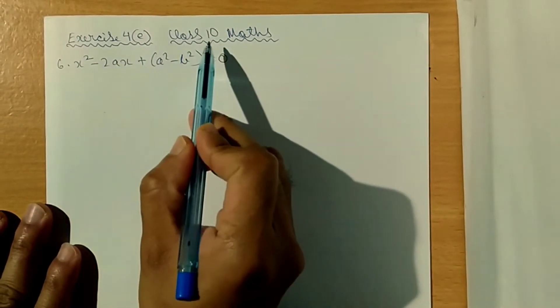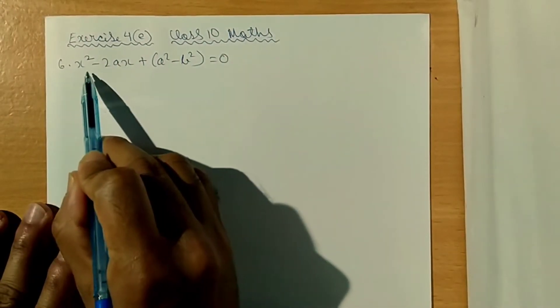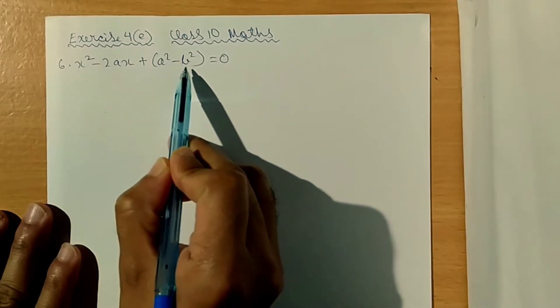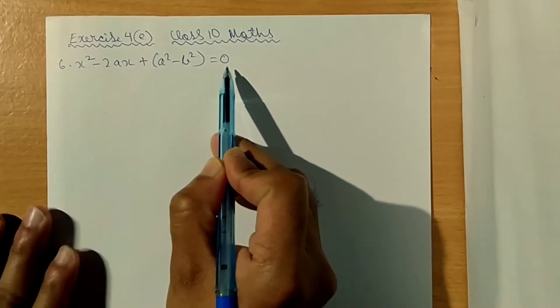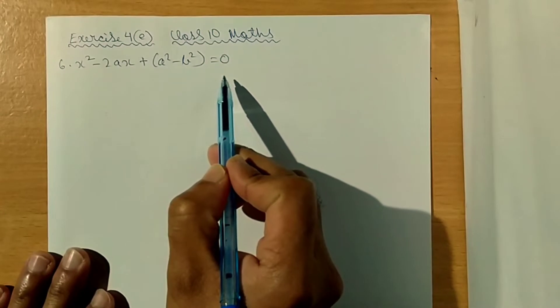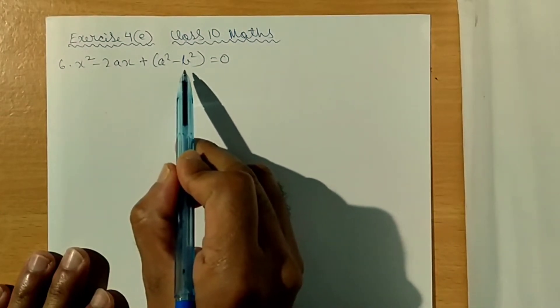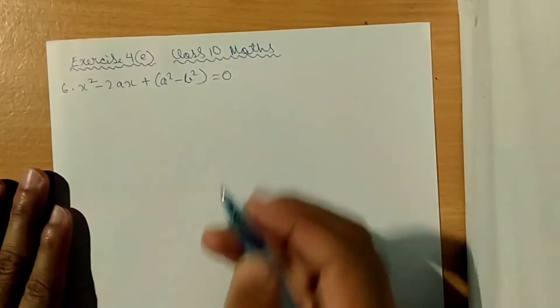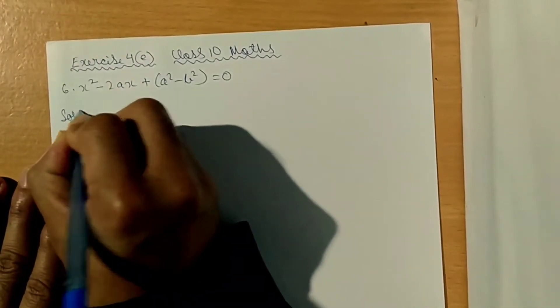XS 4E Class 10 Maths Q6: X squared minus 2AX plus A squared minus B squared is equal to 0. If you want to check the real roots, you can see the roots. Solution.